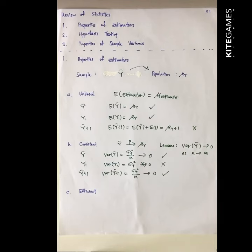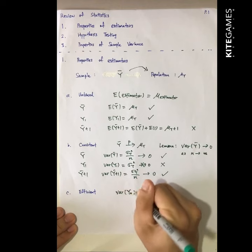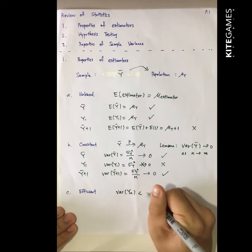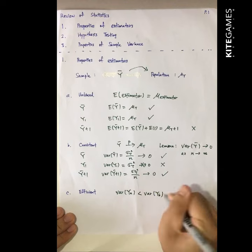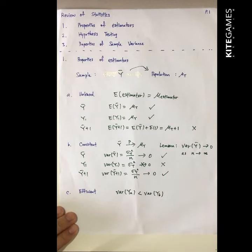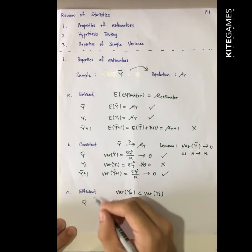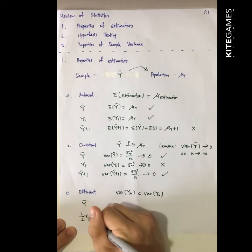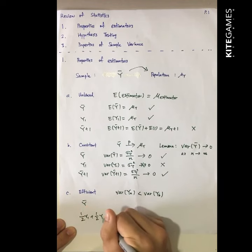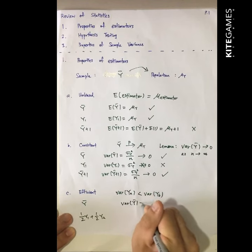The last property is called efficiency. If estimator A is more efficient than estimator B, we say the variance of A is smaller than the variance of B. Let's look at two estimators: Y-bar, and one-half of Y1 plus one-half of Y2. The variance of Y-bar is variance of Y divided by N.